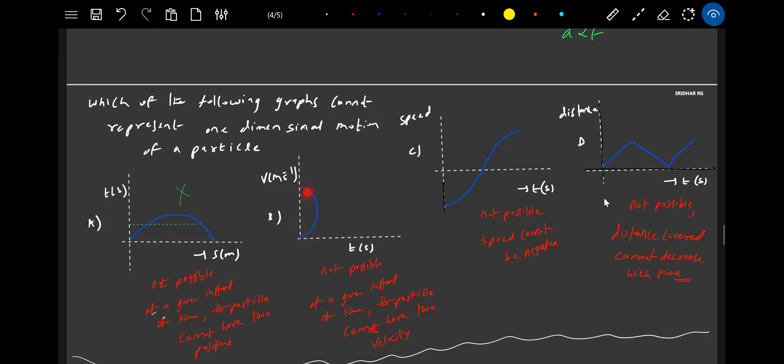Then similarly, at a given instant it cannot have two velocities. Only one specific velocity - the unique velocity the object should have. At a given instant, it cannot have two velocities. You can see this is ruled out.